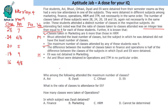Bhuvi attended the least number of classes, but the subject in which he was detained did not have the least number of classes. The least attendance possibility is 4, but that belongs to the subject with the fewest classes (16), so Bhuvi cannot be detained there. The next least possibility is 5, so Bhuvi attended 5 classes — meaning attendance for 20 classes is 5. Therefore attendance for 16 classes cannot be 4, so it must be 8. And since each student attended a distinct number of classes, attendance for 24 classes must be 6.